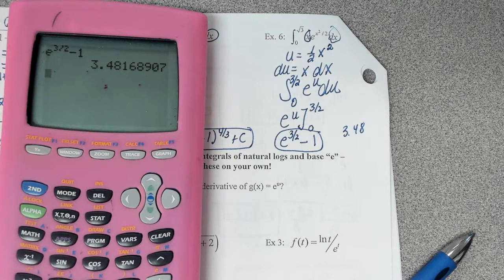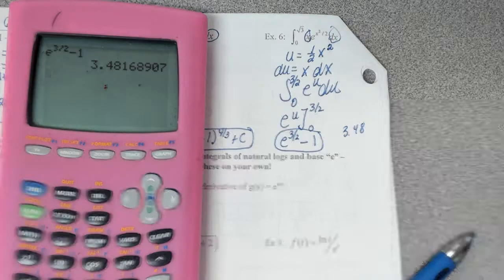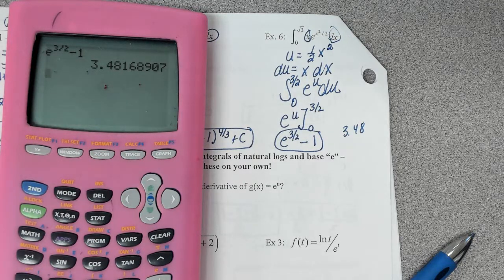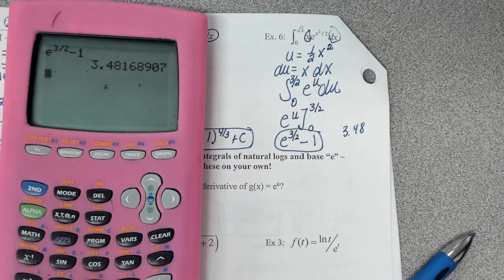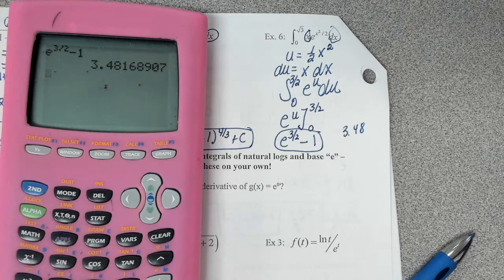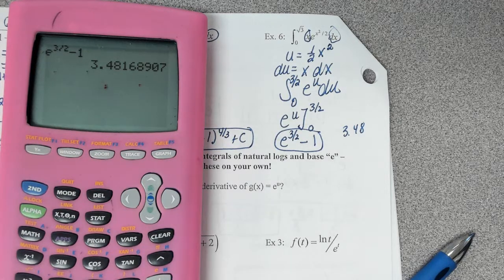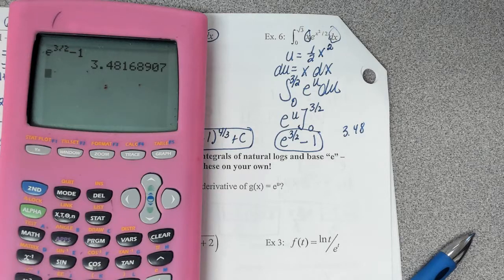All right. Any questions? So the only thing we have to remember is the derivative of e to the u is e to the u times u prime. The integral of e to the u is e to the u. The derivative of natural log of x is 1 over x. The integral of 1 over x is going to be natural log of x. You need to know those things. That's what this is all about on this section. Thank you.